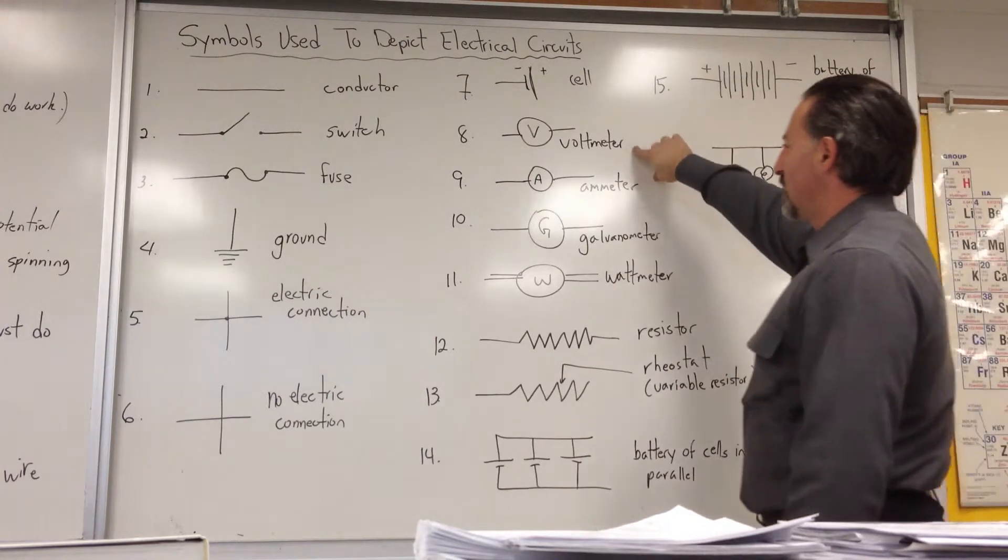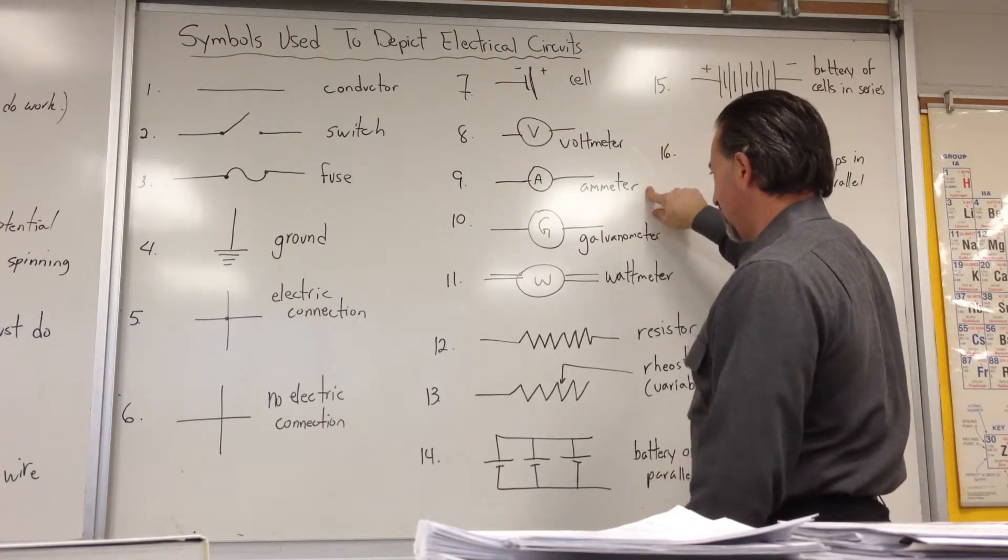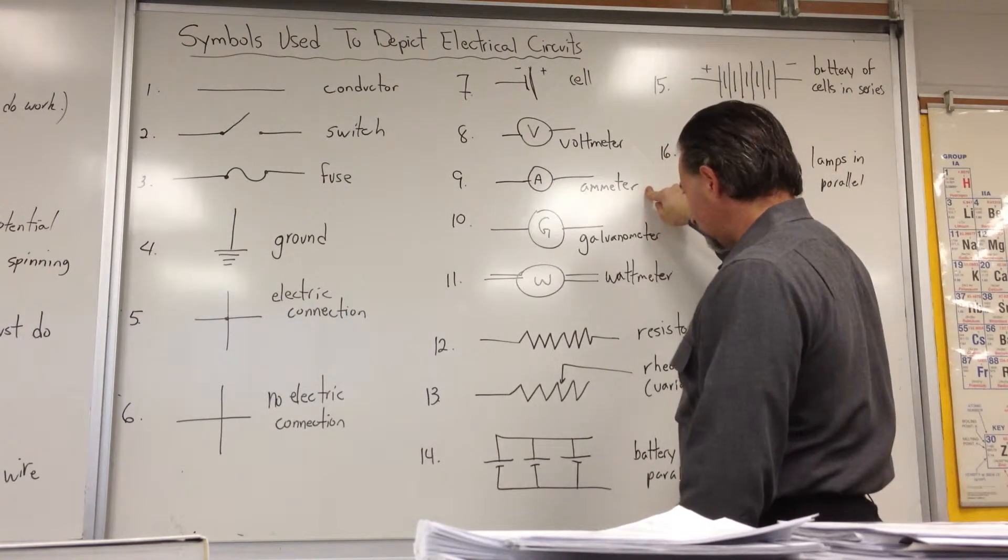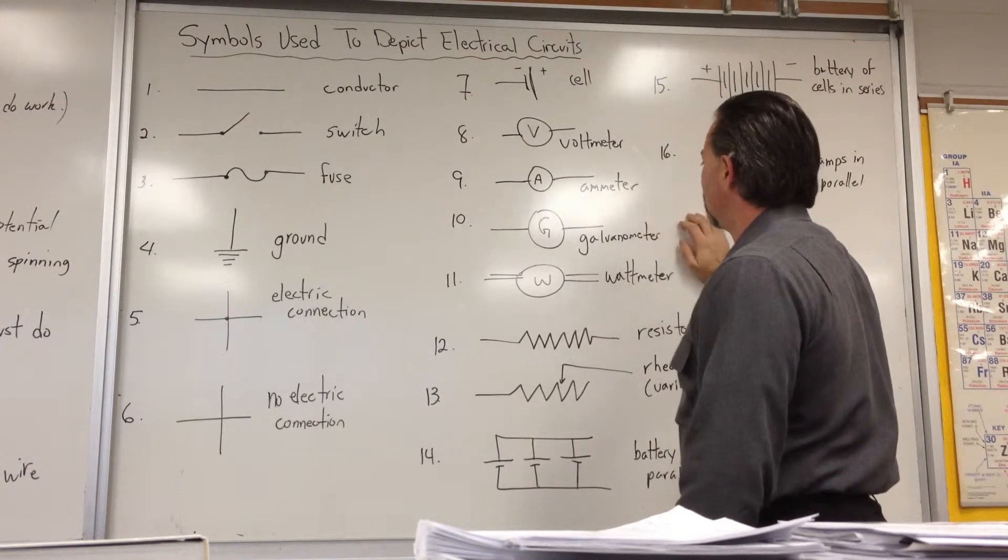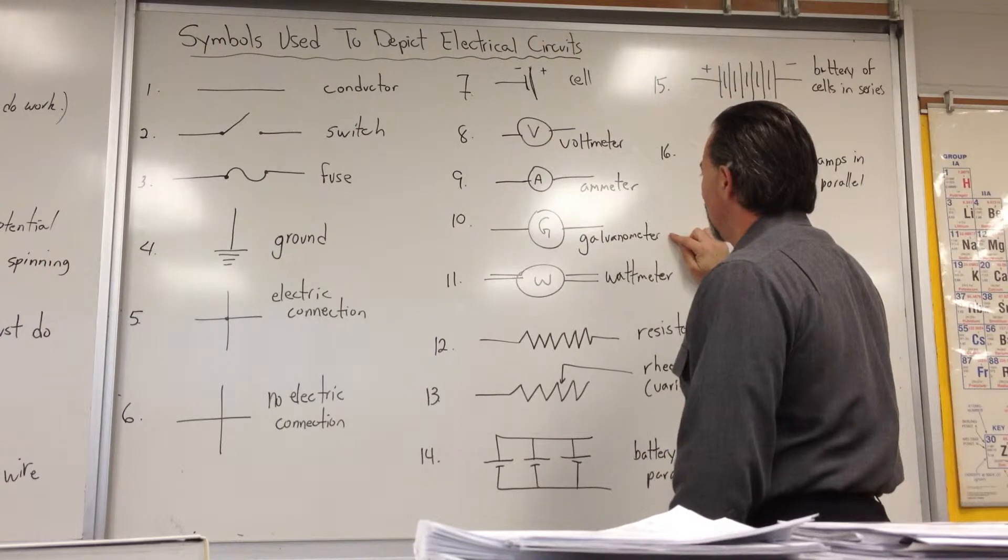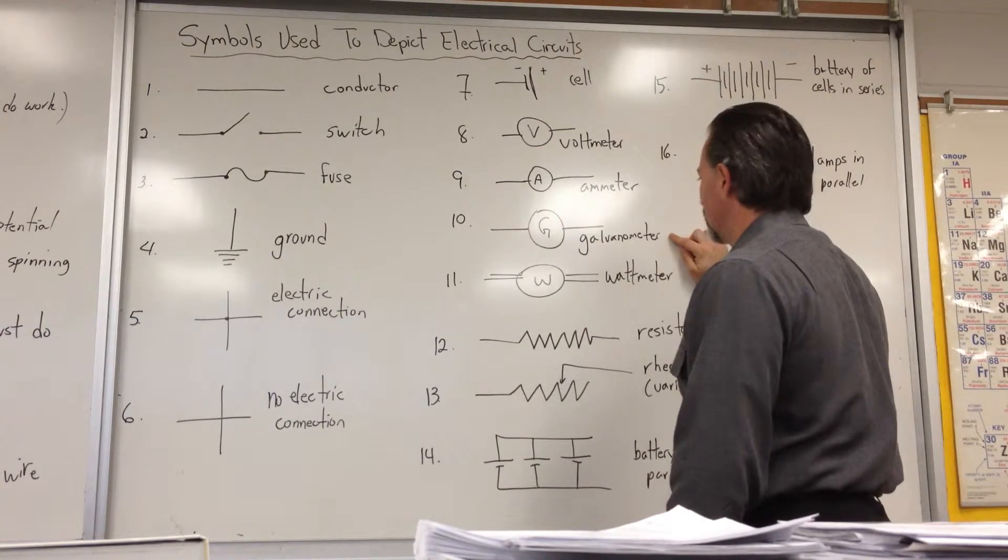A voltmeter measures how much energy each electron has. An ammeter measures the flow of current. A galvanometer—I'm not sure what galvanometers do. I'll have to look that up.